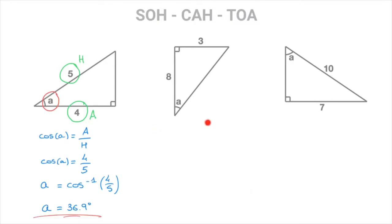Let's look at the next example. Again, our starting point is to summarize the information we're given relative to this interior angle A. Looking at this triangle, we can see that we're given its adjacent side length — that's the 8 here, which I mark with an A — as well as its opposite side length, which is 3, that I mark with an O. Now I look through SOH, CAH, and TOA for the only one of those three words containing both the letters O and A.